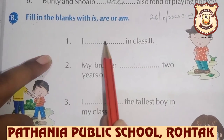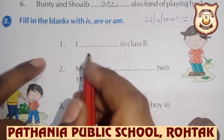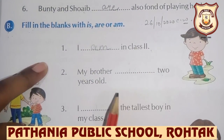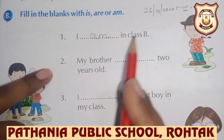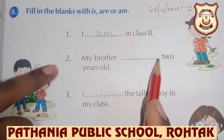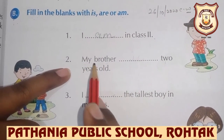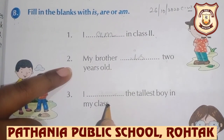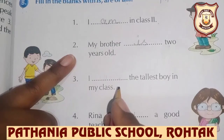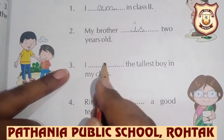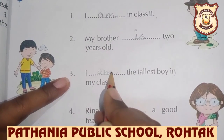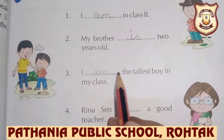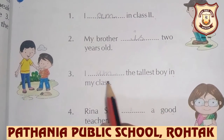First question: I — in class 1. I am. I के साथ हम यूज़ करते हैं Am. I am. Class 2: My brother — 2 years old. My brother is single, so we use 'is'. My brother is 2 years old. I am the tallest boy in my class.